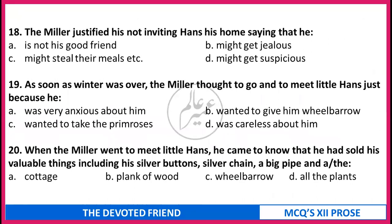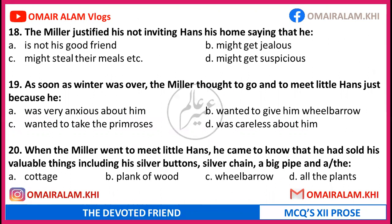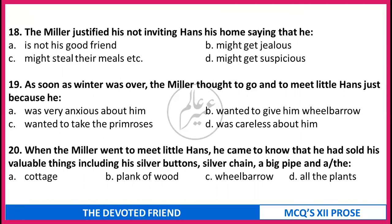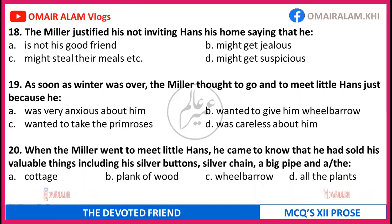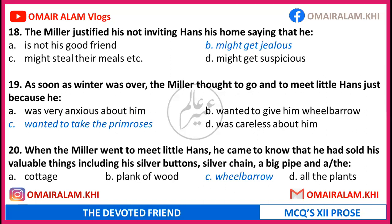The Miller justified his not inviting Hans home saying (a) he is not his good friend, (b) he might get jealous, (c) he might steal their meals, (d) might get suspicious. As soon as winter was over, the Miller thought to go and meet little Hans (a) just because he was very anxious about him, (b) wanted to give him the wheelbarrow, (c) wanted to take the primroses, (d) was curious about him. When the Miller went to meet little Hans, he came to know that Hans had sold his valuable things including (a) silver buttons, (b) silver chain, (c) a big pipe and the cottage, (d) wheelbarrow. Correct answers: 18 - might get jealous. 19 - wanted to take the primroses. 20 - wheelbarrow.